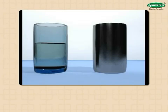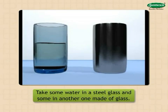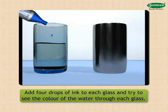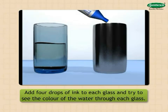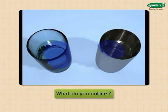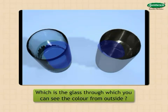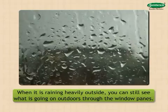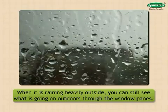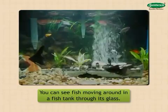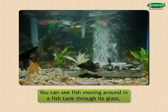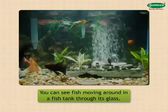Transparency of substances. Add four drops of ink to each glass and try to see the color of the water through each glass. What do you notice? Which is the glass through which you can see the color from the outside? The water attains the color of the ink. You can see through the glass that is made out of glass. When it is raining heavily outside, you can still see what is going on outdoors through the window panes. You can see fish moving around in a fish tank through its glass. Now, let us see why this happens.